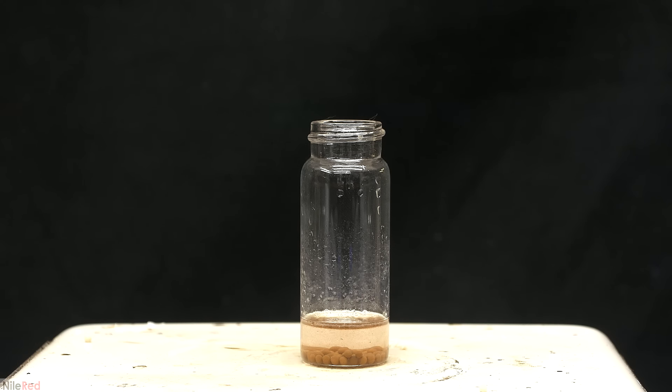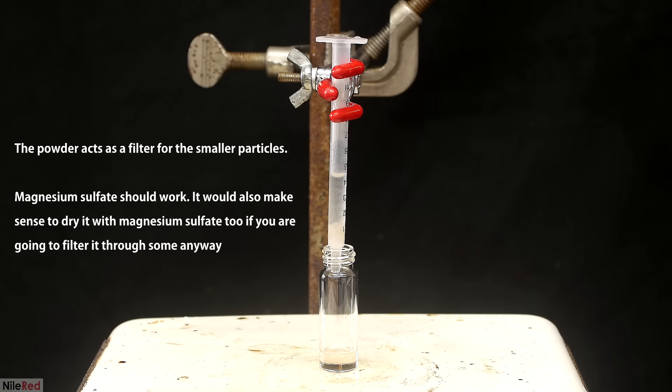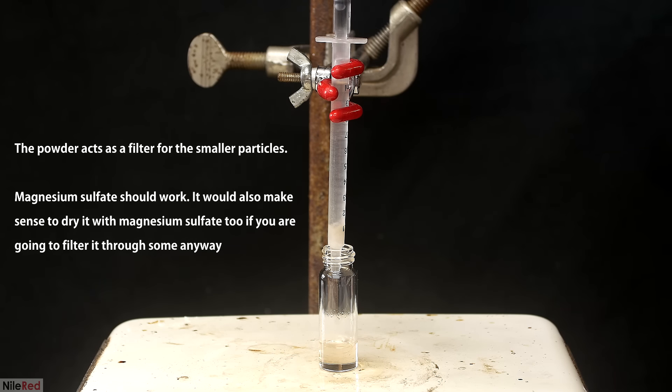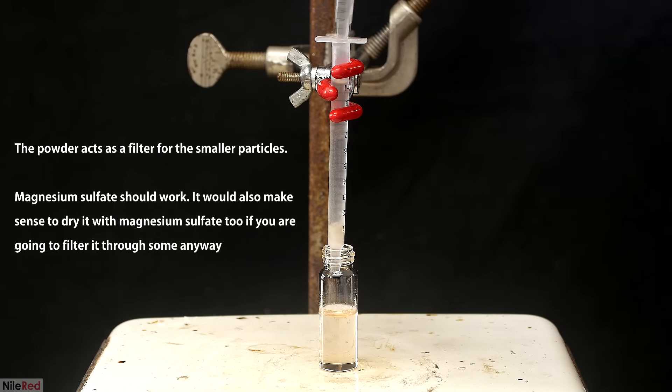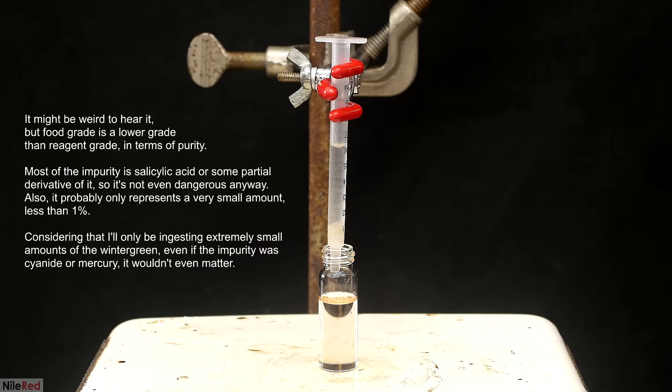The wintergreen cleared up quite a bit, but there was still some solid stuff floating around. So to get rid of it, I filtered it through some cotton and celite. If no celite's available, it can be replaced with a little bit of magnesium sulfate. The stuff that filters through is crystal clear, but it's tainted slightly yellow. The yellow color, as well as some other impurities, can be removed by distillation, but I decided not to do one.